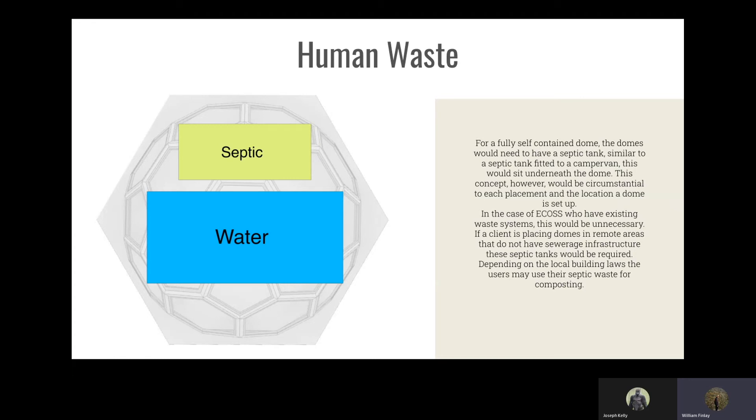In the case of ECOS, who have existing waste systems, this would be unnecessary. If a client is placing domes in remote areas that do not have sewage infrastructure, these septic tanks would be required. Depending on the local building laws, users may also use their septic waste for composting.